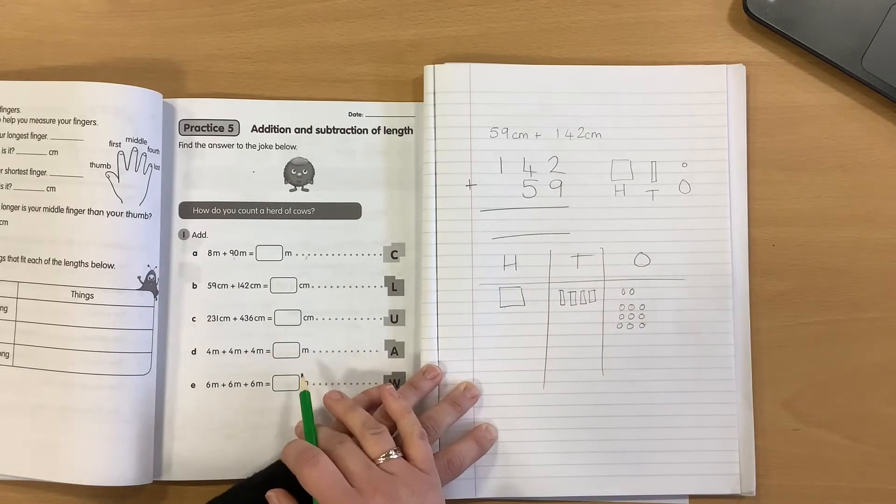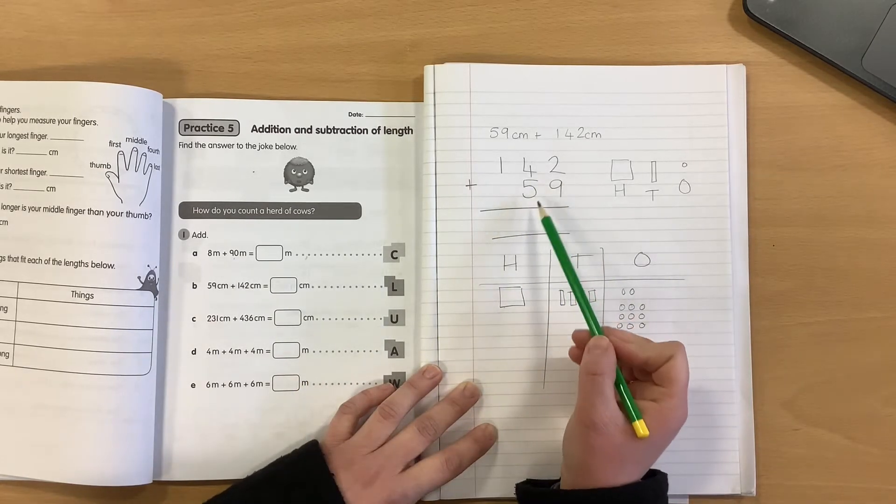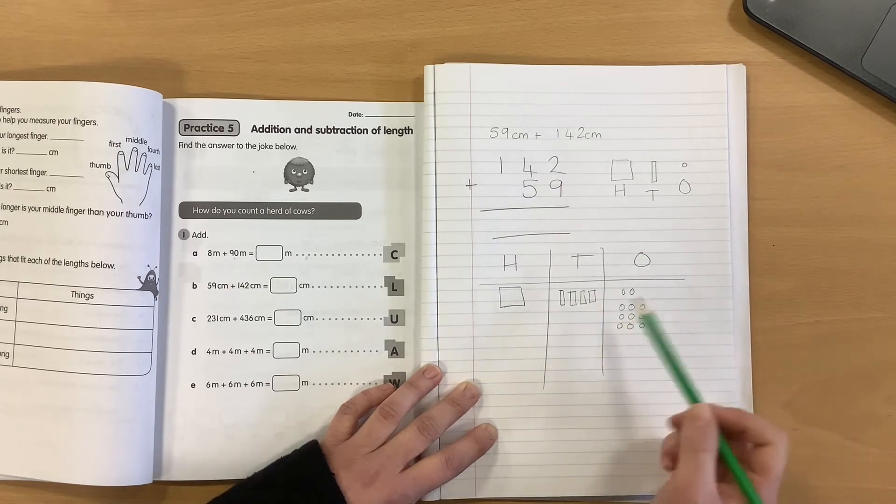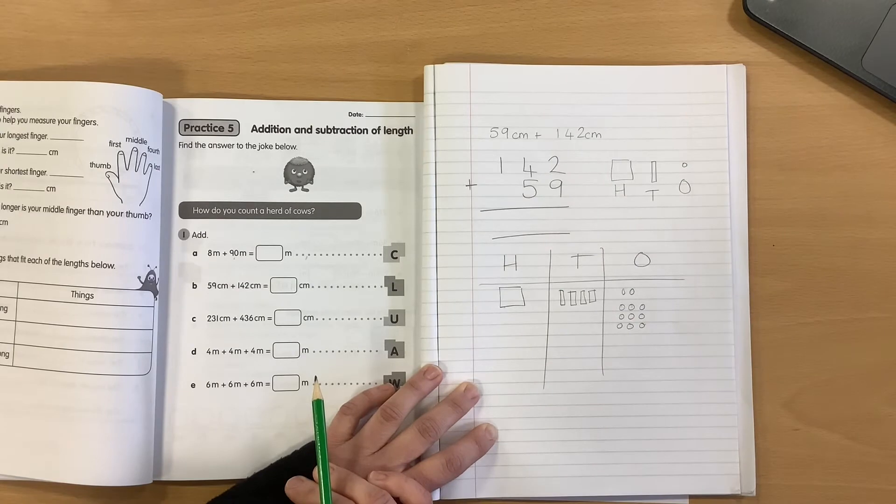Now, I cannot go greater than the digit nine in my ones column, because when I get to ten ones, ten ones is the same as one ten. So, I need to do some regrouping.